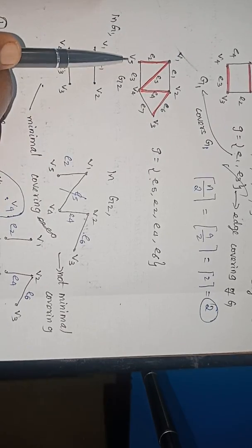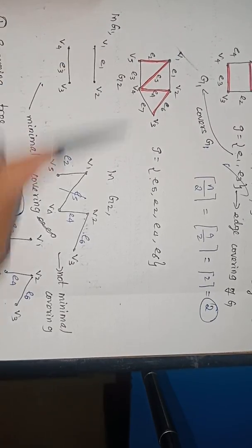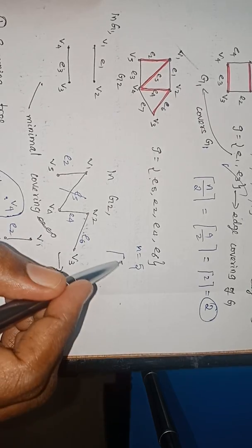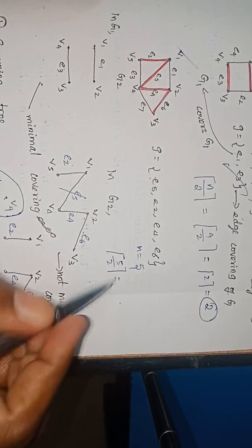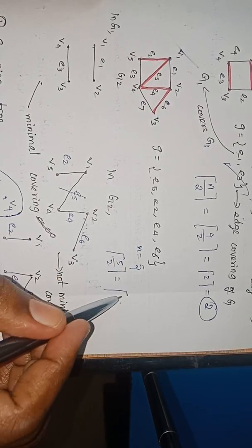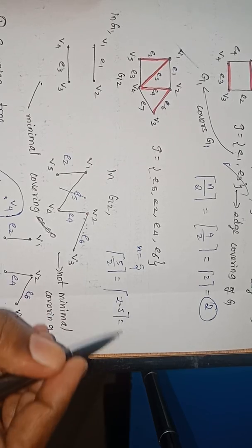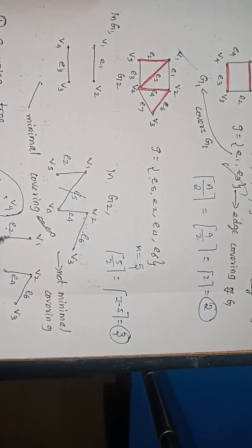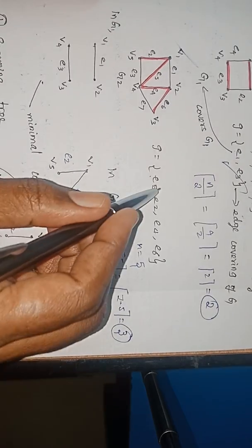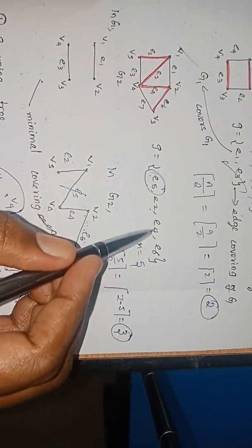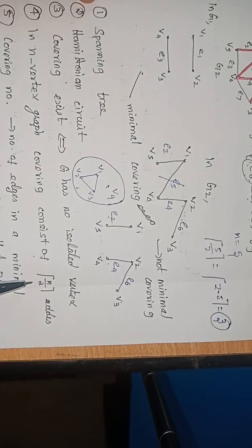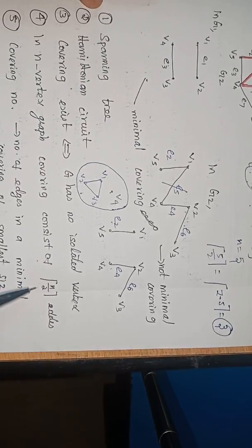Yes. This graph contains 5 vertices, so it will be having 2.5, rounding to 3. So the minimal covering of this graph contains 3 edges. Removing E2, E4, E6 — it is a minimal covering. As explained earlier, covering number is the number of edges in a minimal covering which is of smallest size.